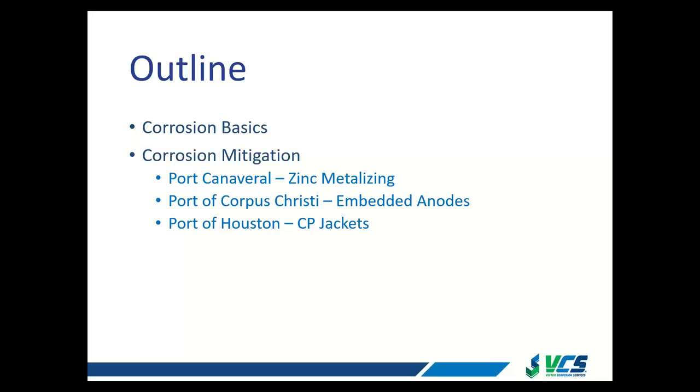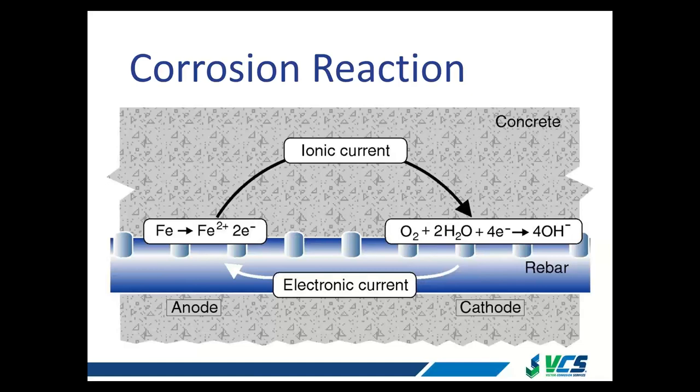Starting with corrosion basics — most people associate corrosion with rust, red rust, and that's actually only one part of the corrosion reaction. Here we have a diagram showing the corrosion reaction. We have the anode, where iron loses an electron and becomes iron oxide — this is where the rust occurs and where the section loss occurs. Whenever we think of orange or red rust occurring, that is the anode part of the reaction.